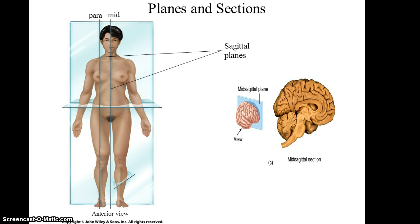You also have the sagittal planes. The sagittal planes cut through the body giving you a left and a right. If this sagittal plane goes through the exact middle of that body or organ, it's referred to as a mid-sagittal plane, and the left and right should be approximately equal. However, you can also have a parasagittal plane if it does not cut evenly through the body or organ.